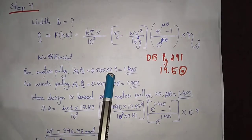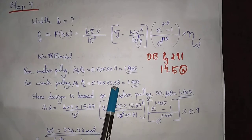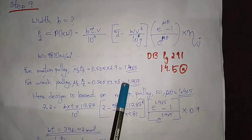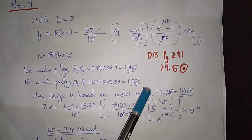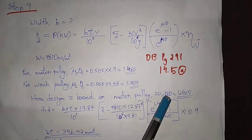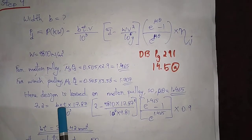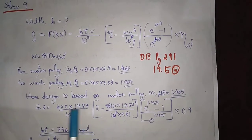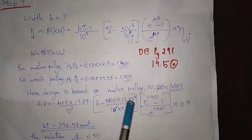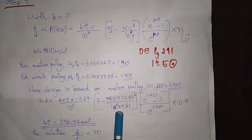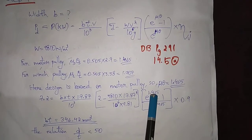The angle of contact for the smaller pulley is 2.9. This is the power pulley. So substituting: b into t into velocity 17.87 divided by 1000, into sigma_d = 2, minus w = 9810, into velocity 17.87 squared divided by 10 raised to 6, into g.